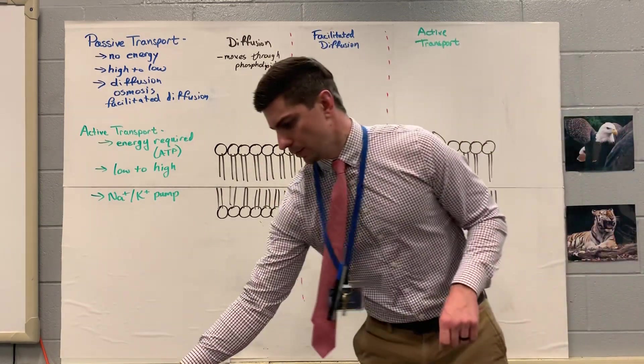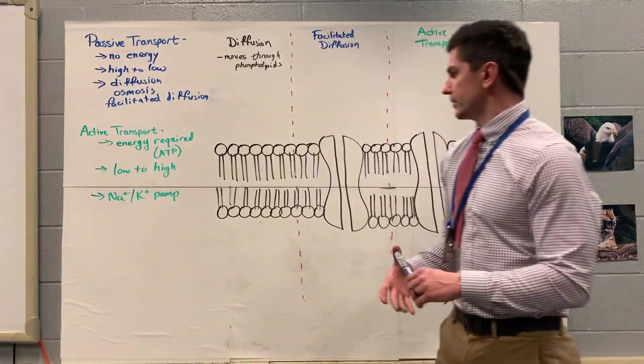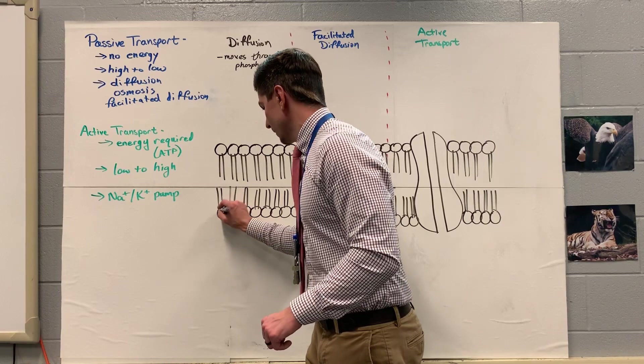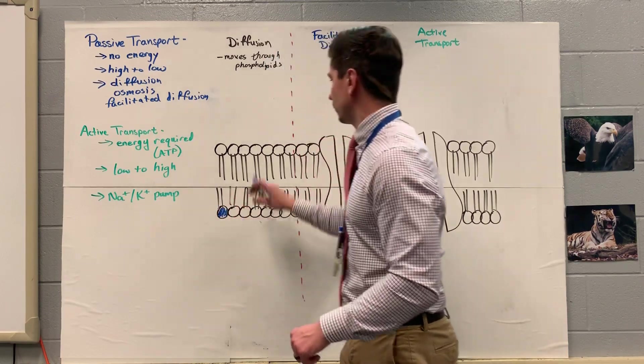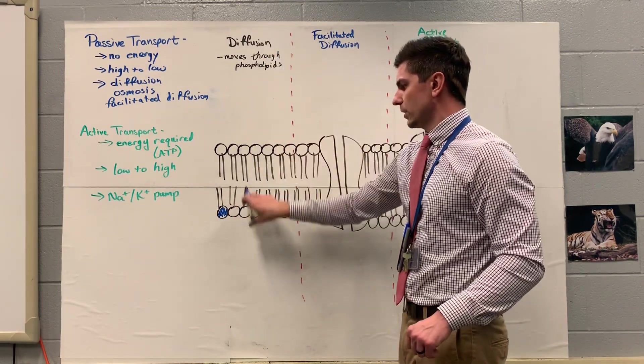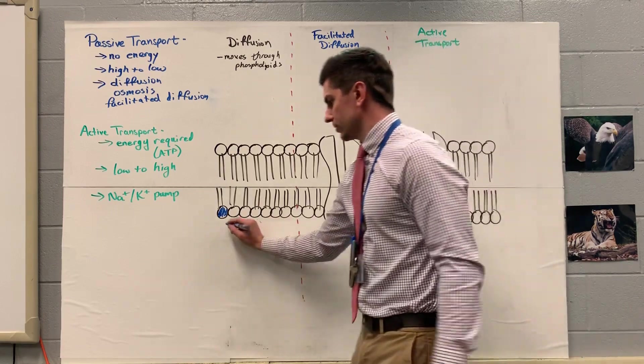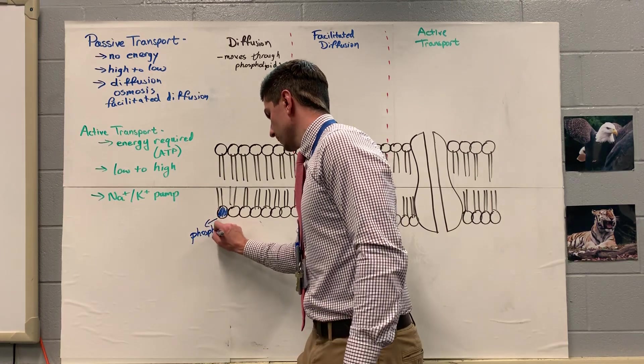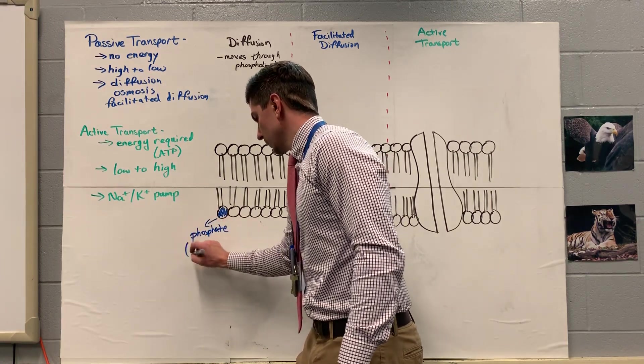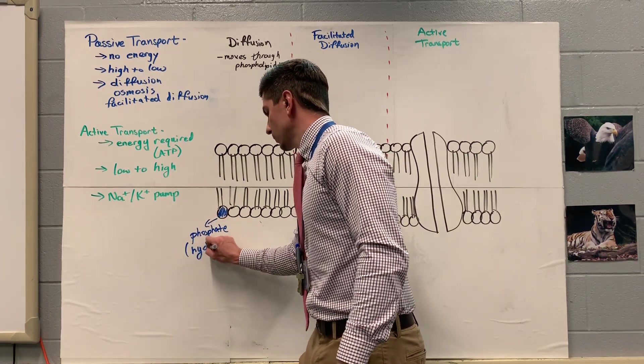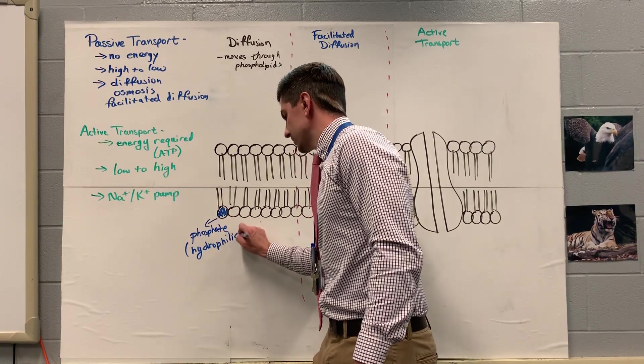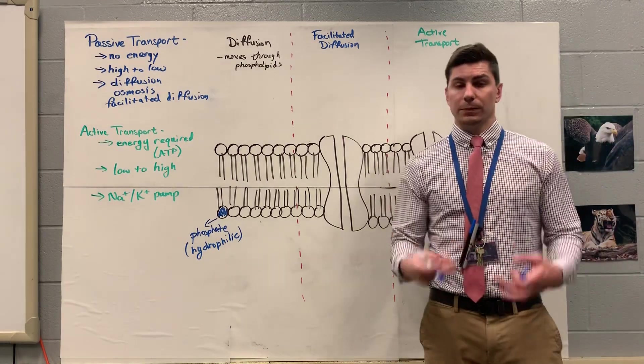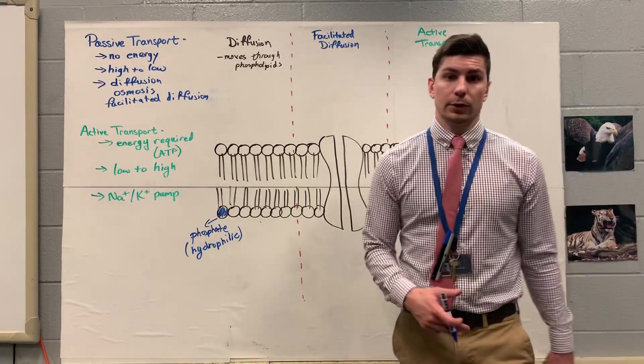I guess this is a good time to go over the different parts of the cell membrane. I don't have any phospholipids labeled here. So right here, these circles that point to the exterior of the cell and the interior of the cell, these are going to be our phosphates. They are going to be hydrophilic. And what this means is that they're able to combine with water. They're able to get up close and personal to water. They're polar, in other words.